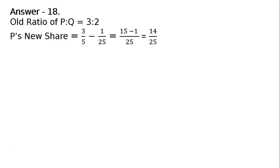It is written a new partner who acquires 1/25th of his share from P. Don't read that 1/5, that is 1/25. LCM 25, 5 into 15 minus 1, 14 upon 25. It is not 1/5, it is 1/25.